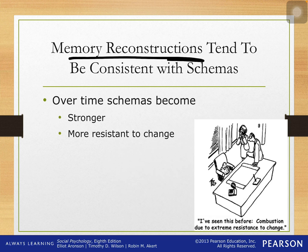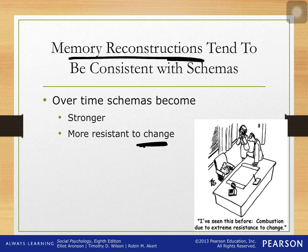These memory reconstructions tend to be really consistent with our schemas and they get stronger over time — they become more resistant to change. For example, I use this example with my mother-in-law, who I thought had an amazing memory. It turns out she was just very confident about her memories, but a lot of times those memories were actually incorrect. She would keep retelling the same story over and over, and if somebody said 'that's not what happened,' she would be very adamant: 'That's not how I remember it.' The memories that we recreate and reconstruct over time become harder and harder to change because that's the way that we remember it.